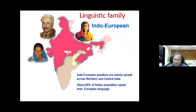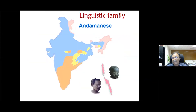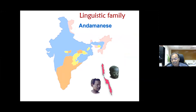In addition to these broad linguistic groups, there are several isolated languages, like the Andamanese. Within the Andamanese, each group speaks their own language — for example, the Onge speak a different language compared to the Great Andamanese. There is another isolated language called Nihali.